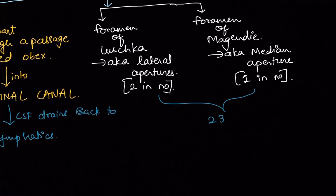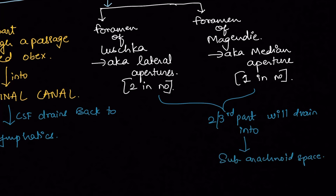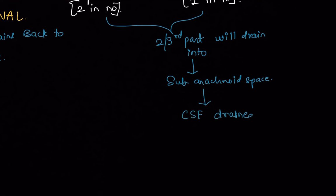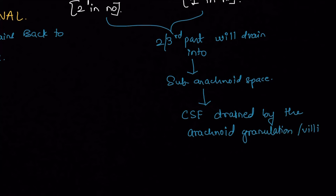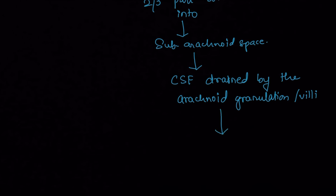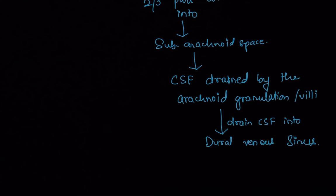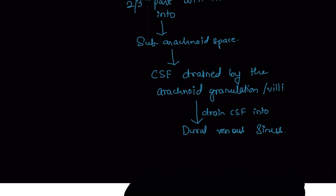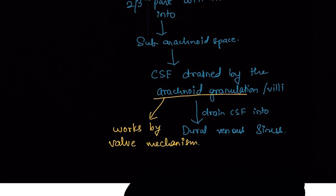The two thirds of CSF drains into the subarachnoid space. From there, CSF is drained by the arachnoid granulations, also called arachnoid villi, which then drain CSF into the dural venous sinuses present between the two layers of the dura mater. The arachnoid granulations work by a valve mechanism so that CSF flows unidirectionally into the venous sinuses, preventing backflow of blood into the CSF.